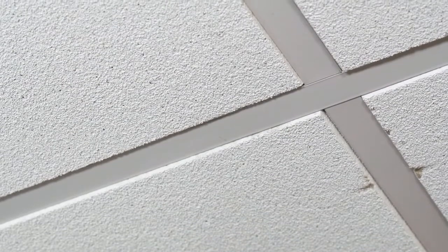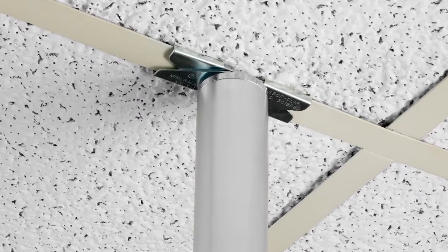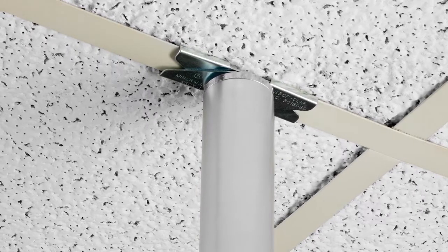Since a drop ceiling uses a frame suspending tiles held in place by gravity, the Kupole Drop Ceiling Adapter adds an anchor point to the top of a ceiling frame that attaches to the top of a Kupole.